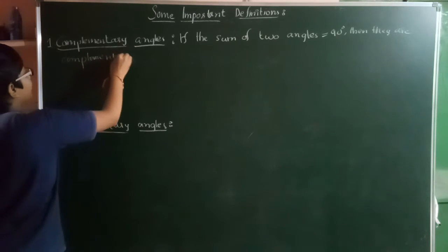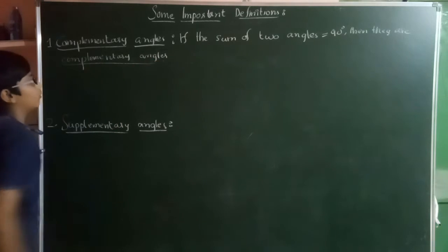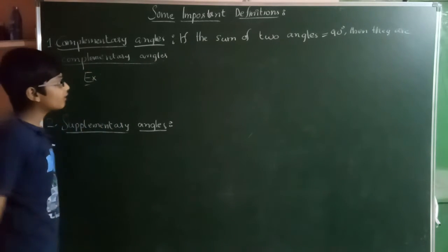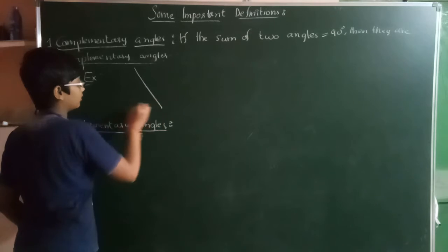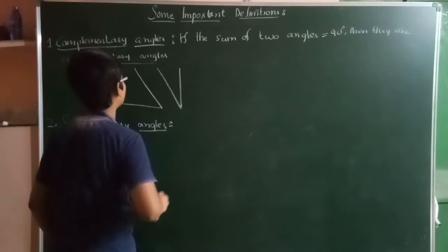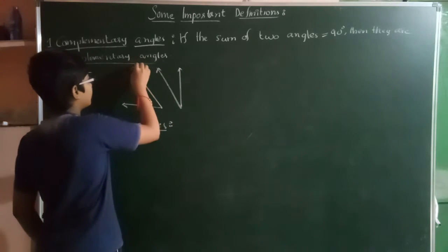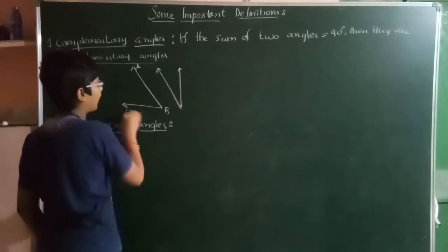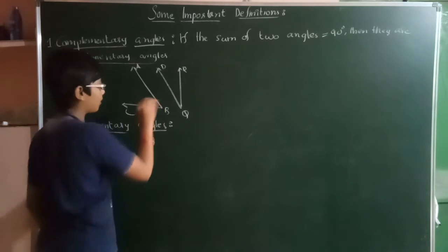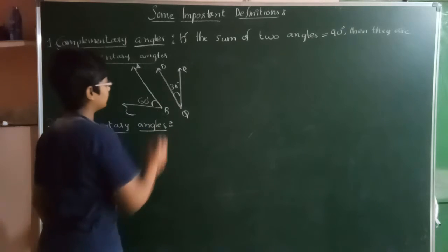Let's see some examples of complementary angles. Now, these two are some angles: angle ABC and angle PQR. The value of angle ABC is 60 degrees and the value of angle PQR is 30 degrees.